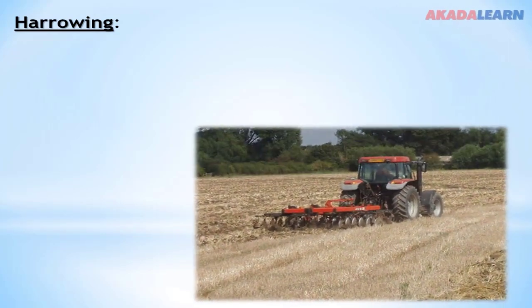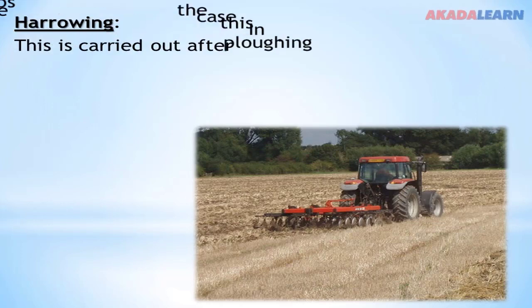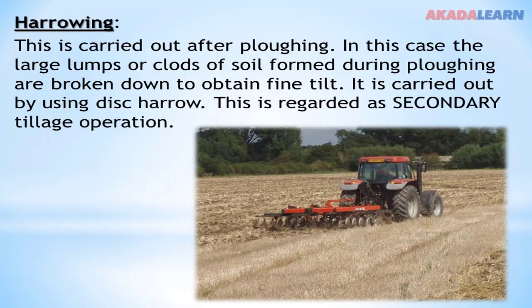Harrowing. After ploughing, harrowing is carried out. In ploughing, lumps or clods of soil are formed; for this soil to be broken down into finer soil, harrowing is carried out. The large lumps or clods of soil formed during ploughing are broken down to obtain fine tillage. It is carried out by using a disc harrow. Harrowing is regarded as a secondary tillage operation.